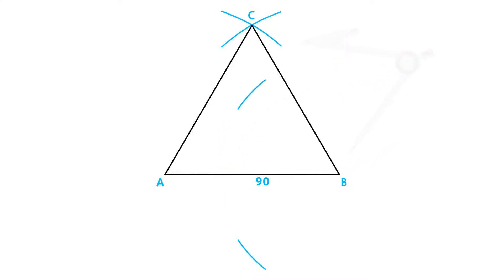Using this same measurement, place your compass on point A and draw another arc above and below side AB. Draw a line through these two intersecting points to complete the perpendicular bisector.